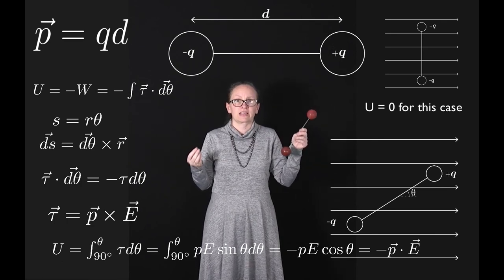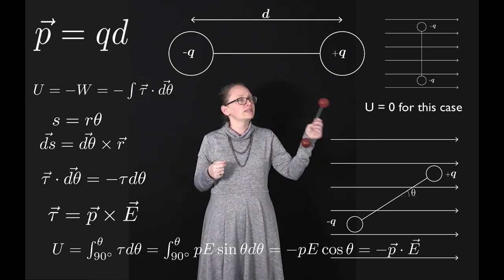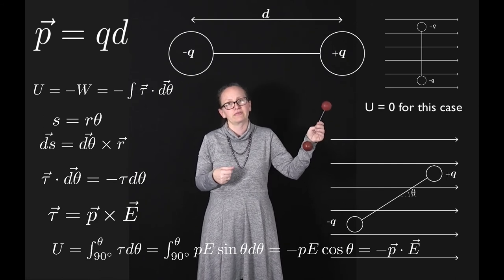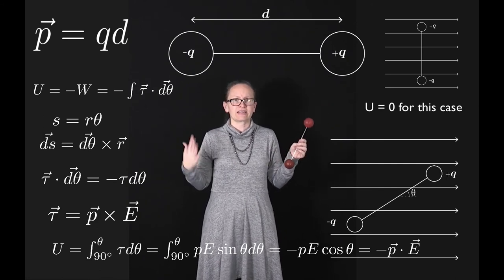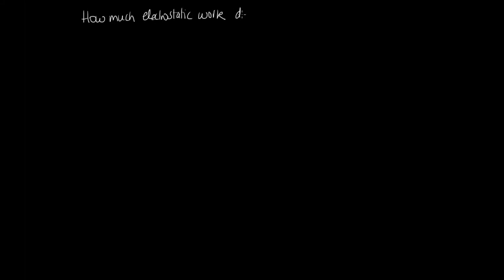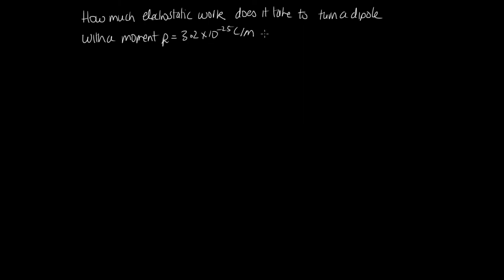Now let's look at an example problem. How much electrostatic work does it take to turn a dipole with moment p = 3.2 × 10⁻²⁵ C·m in a uniform field E = 50 N/C from θ = 70° to θ = 40°? What is the change in potential energy?